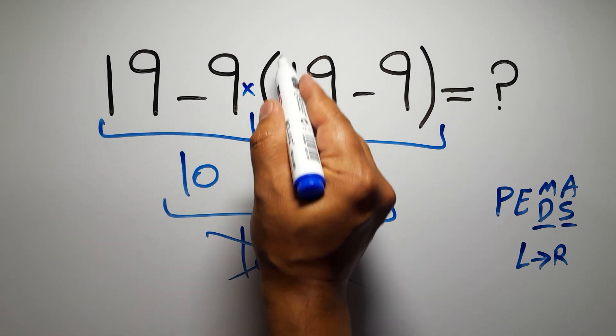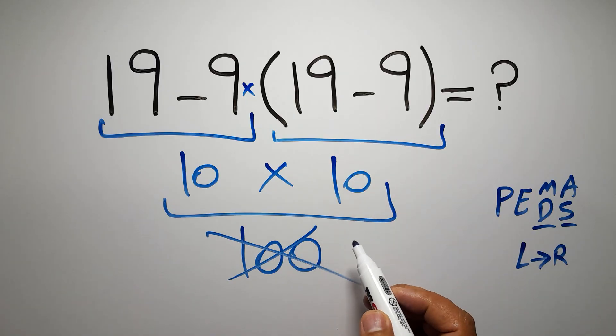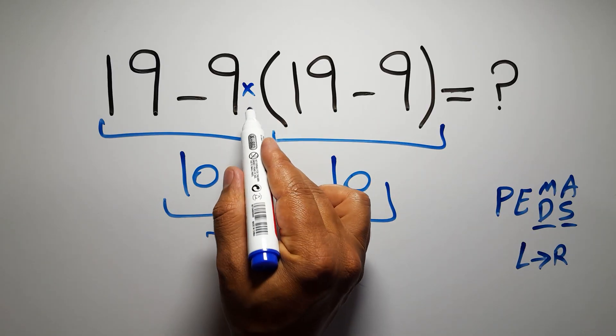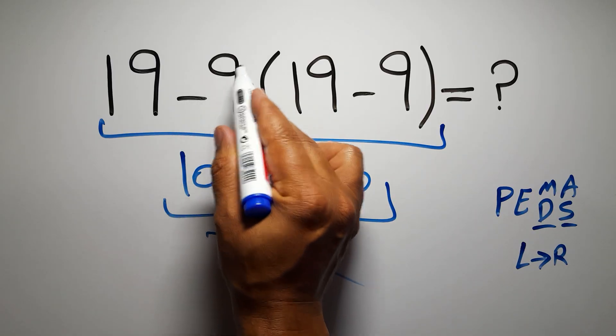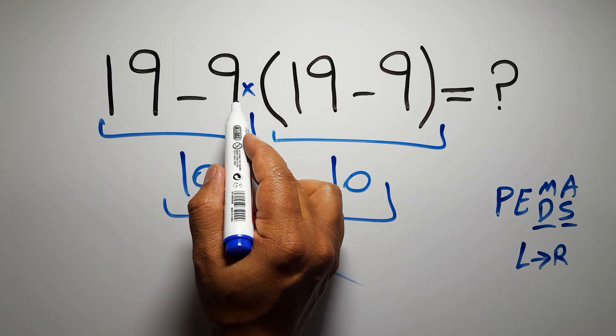In this expression we have one subtraction, one multiplication, and one parentheses. Inside this parentheses we have one subtraction. Here we have a multiplication because in mathematics when a number is placed next to parentheses it means multiplication, and we usually don't write the multiplication sign for brevity.